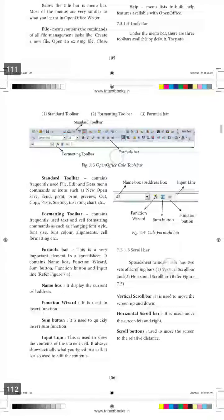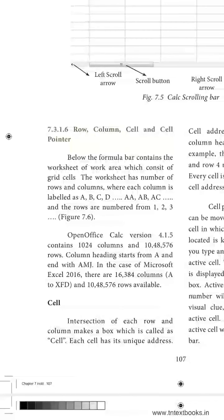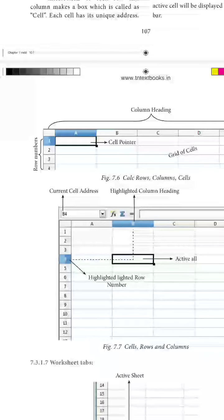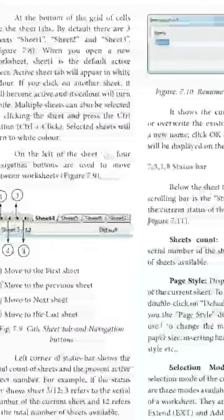Here you can see how to create a row, how to create a column, and how a cell works, including all the labeling features. The intersection of a row and a column is known as a cell. The cell pointer looks like this — the grid of cells. When a cell is selected, its particular value — for example, column B and row index 4 — is shown in the name box.